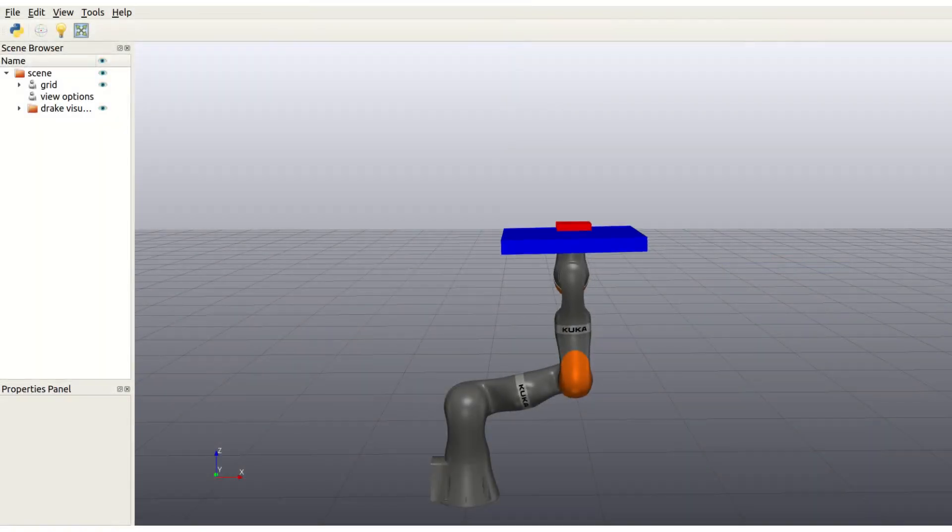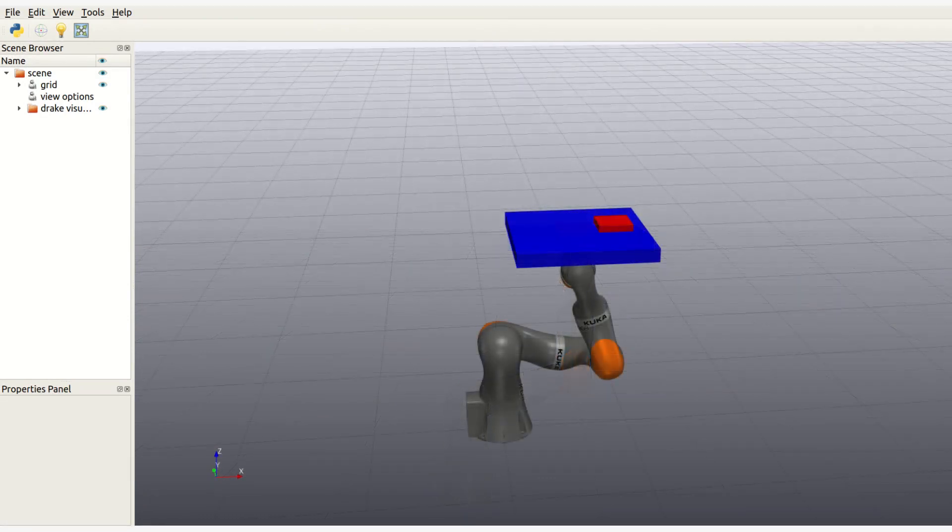Solving the inverse kinematics allows us to execute these trajectories on a simulated 7 degree of freedom robot arm.